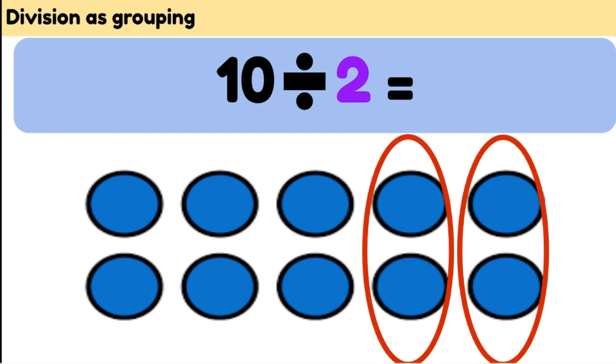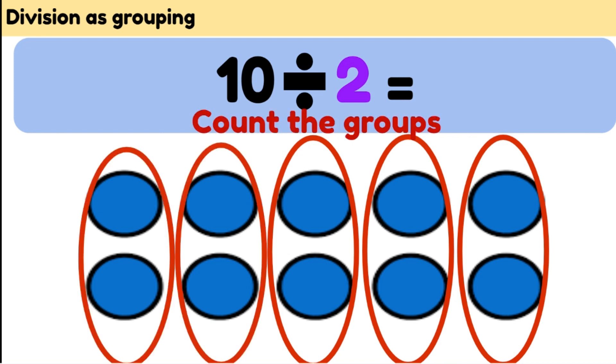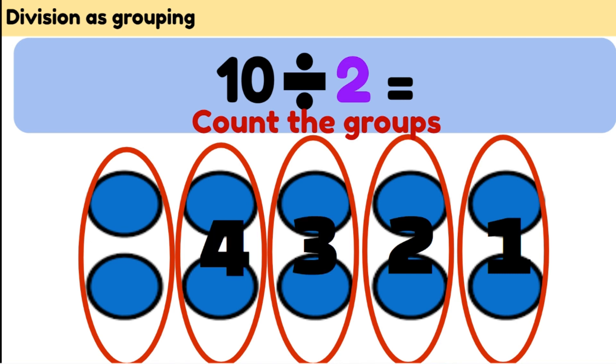1 group of 2, 2 groups of 2, 3 groups of 2, 4 groups of 2, 5 groups of 2. I count the groups. 5 groups, so 5 is my answer.